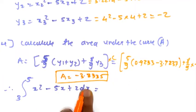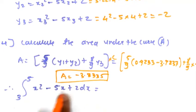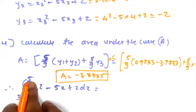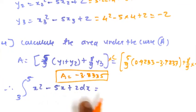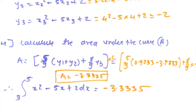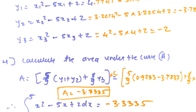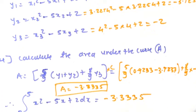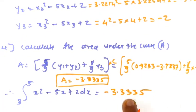Rounding to 4 decimal places, this value of the integration from 3 to 5 of x² − 5x + 2 dx equals −3.3335, obtained using the Gauss-Legendre three-point formula. I hope you understood this numerical. Thank you, thanks for watching.